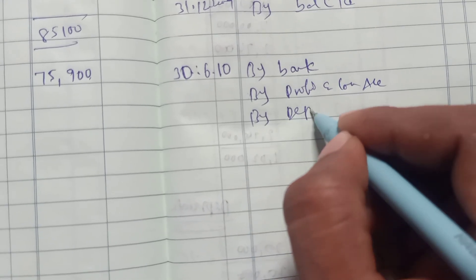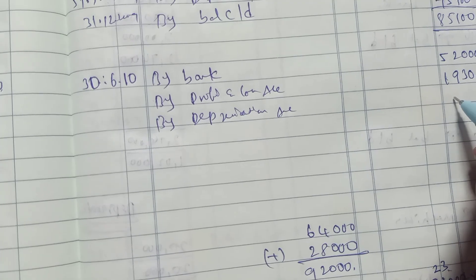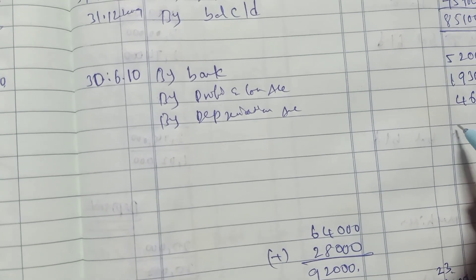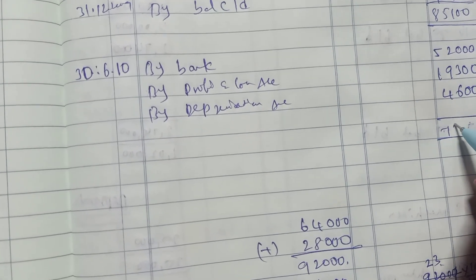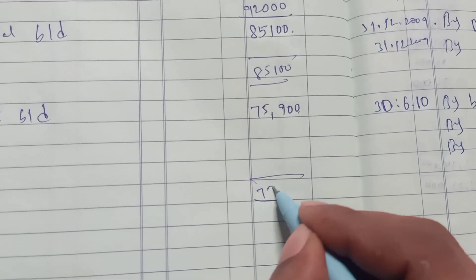By 6 months depreciation, $4,600. Total $75,900.